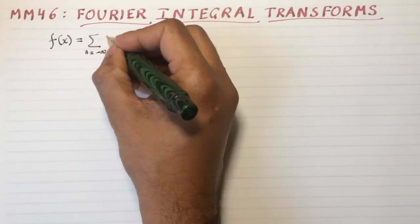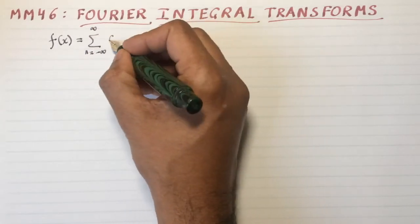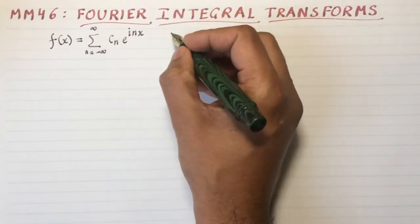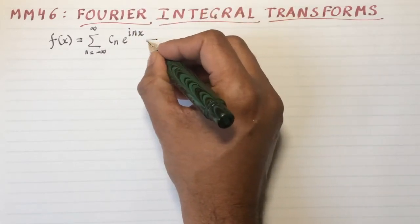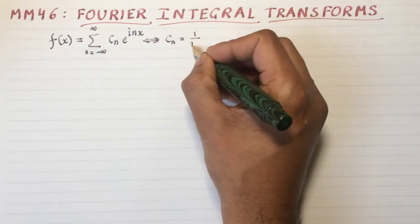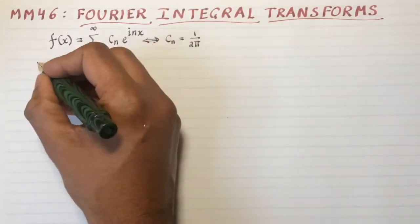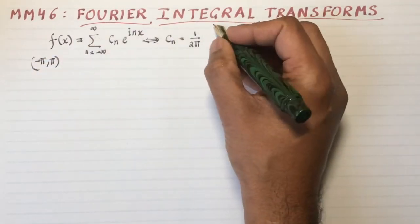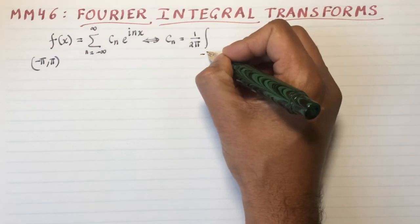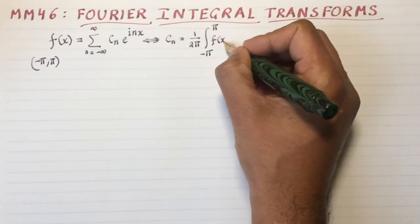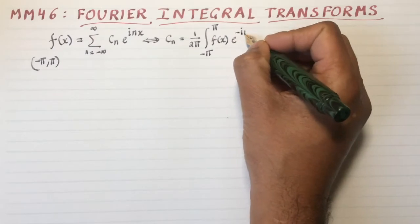So n equals minus infinity to plus infinity of cn e to the i nx is the complex version of a Fourier transform. From that we get the coefficient cn equals one over two pi. These functions are defined from minus pi to pi with a periodicity of two pi of the integral from minus pi to pi of f of x e to the minus i nx.